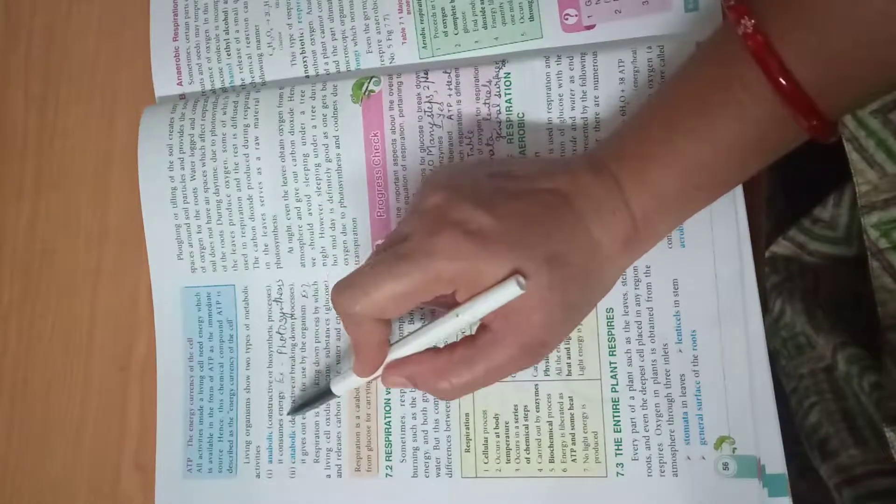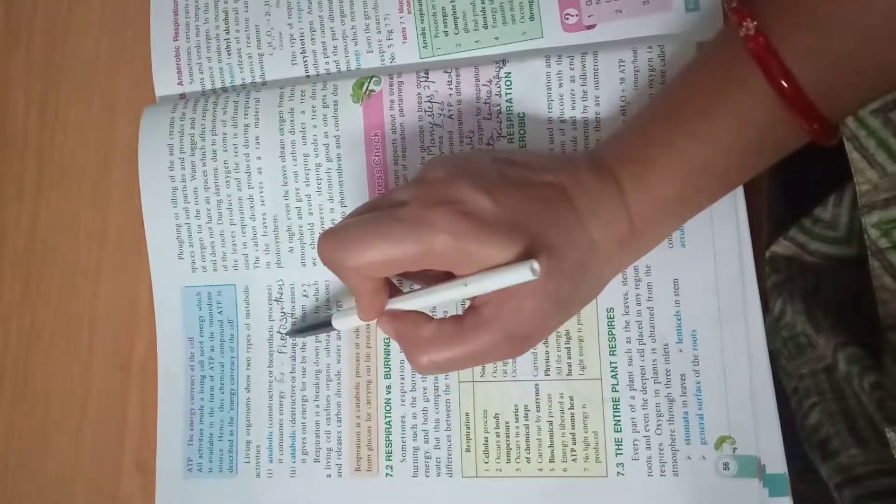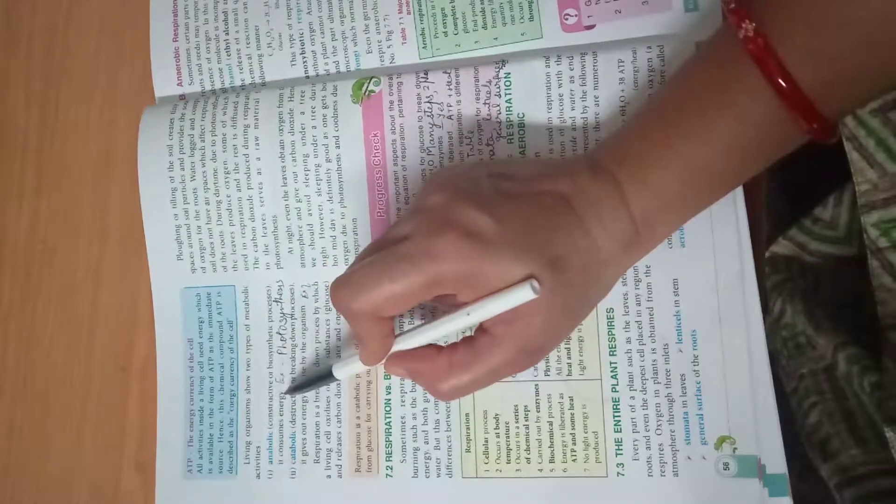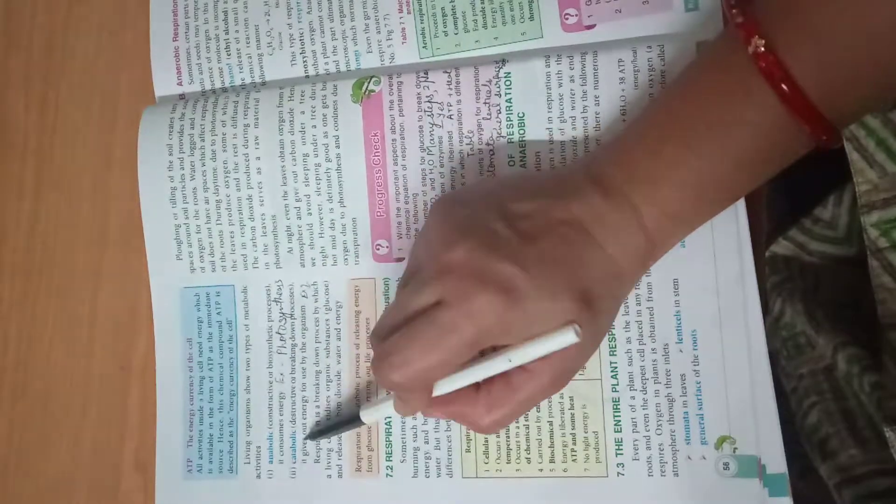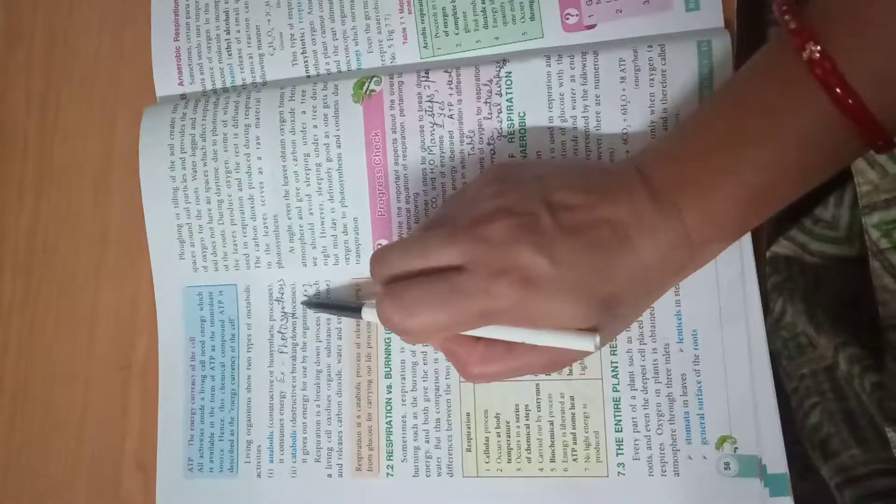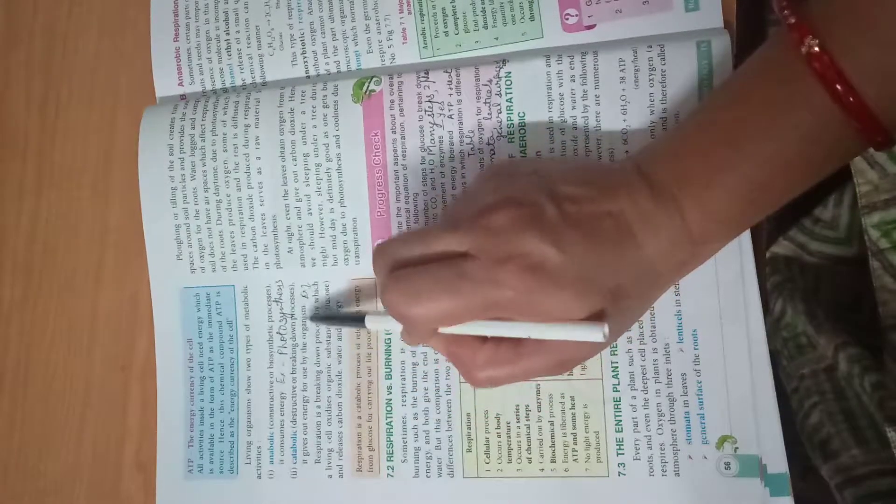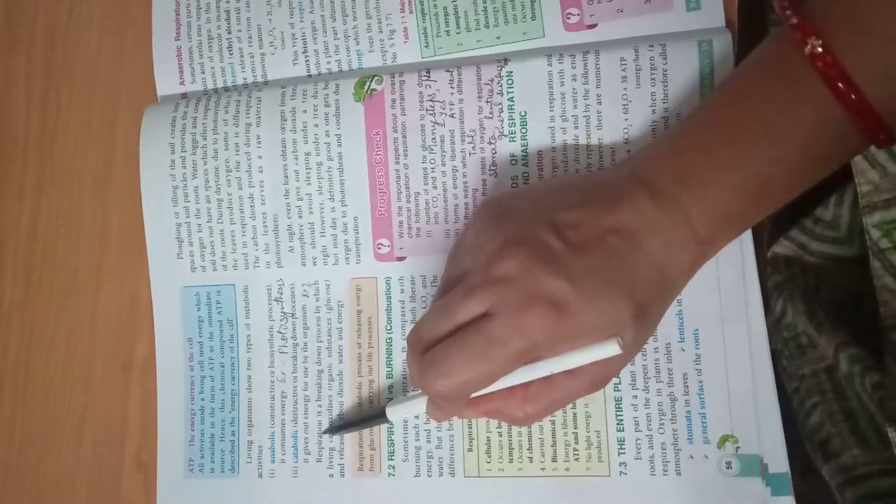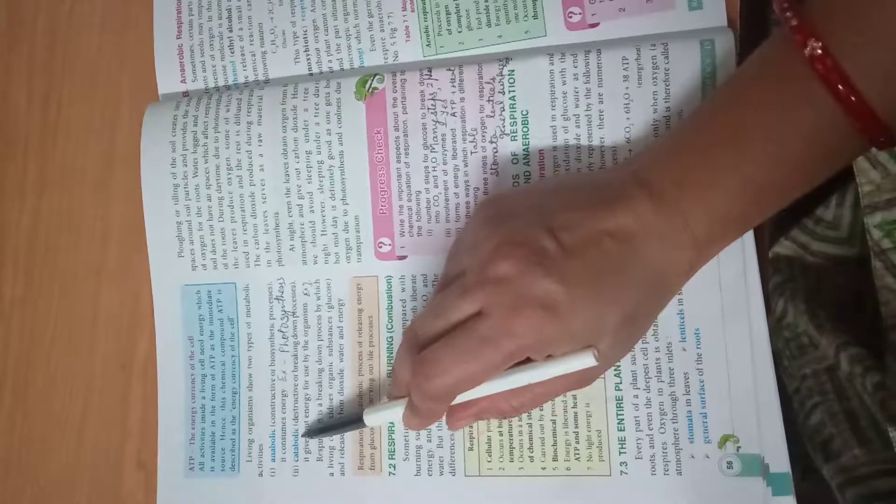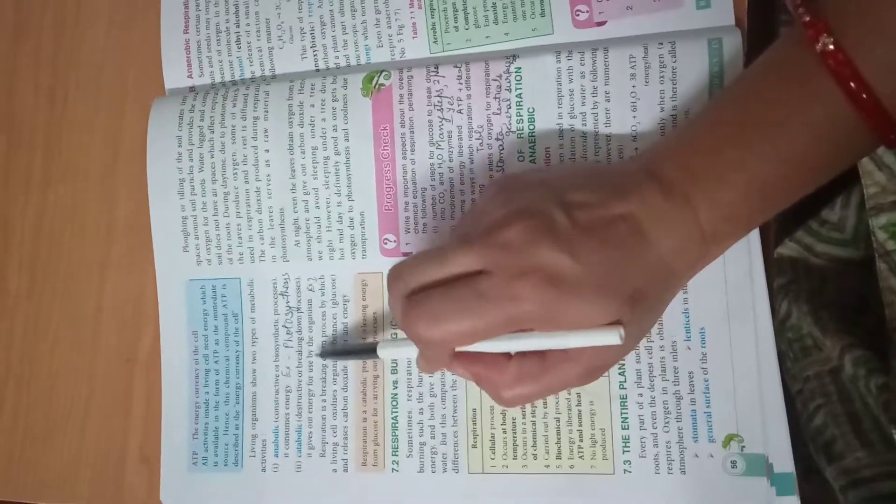Photosynthesis consumes energy and utilizes solar energy, so this is an anabolic process. Catabolic are destructive or breaking down processes. It gives out energy for use by the organism. Example is respiration.